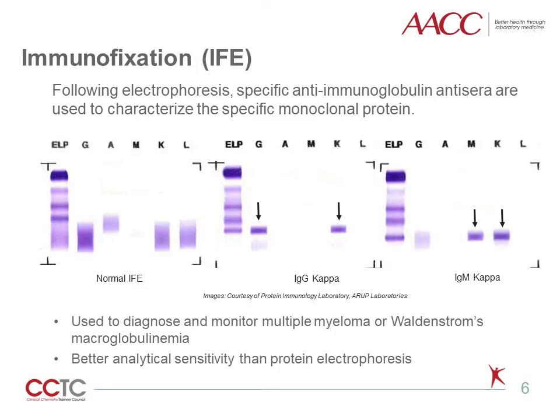Immunofixation is commonly employed when there is an abnormal protein, known as an M-spike, detected using gel electrophoresis or capillary electrophoresis. Immunofixation electrophoresis characterizes the abnormal bands by applying specific antisera to each lane of the electrophoretic gel. The immune complex is then viewed by staining. Examples include a normal IFE, an IgG kappa monoclonal antibody, and an IgM kappa monoclonal antibody. IFE is used to diagnose and monitor different plasma cell dyscrasias, such as multiple myeloma and Waldenstrom's macroglobulinemia. IFE is more analytically sensitive, but M-proteins are not quantified using IFE.